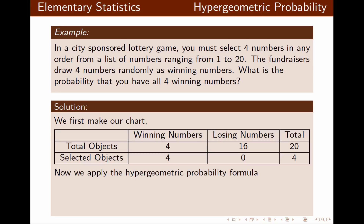Now we can use the hypergeometric probability formula: four winning numbers choosing four, times 16 losing numbers choosing none, divided by 20 total numbers choosing four. Once the calculation is done, that probability is 1 divided by 4845.